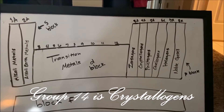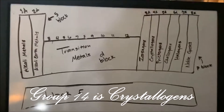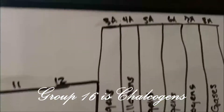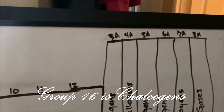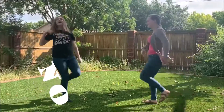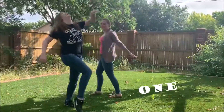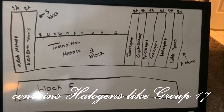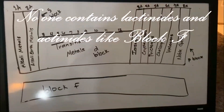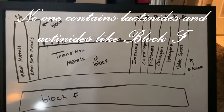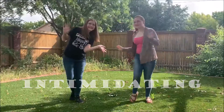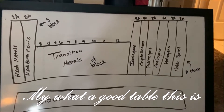Group fourteen is chrysalogens. Group fifteen is nyctogens. Group sixteen is chalcogens. No one contains halogens like group seventeen. As a periodic table, you're intimidating — my, what a good table this is.